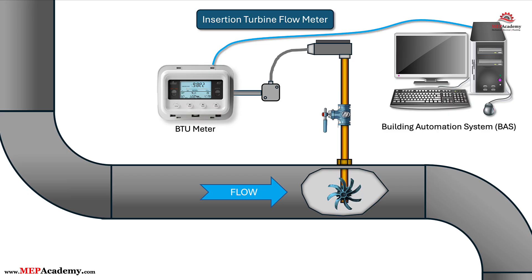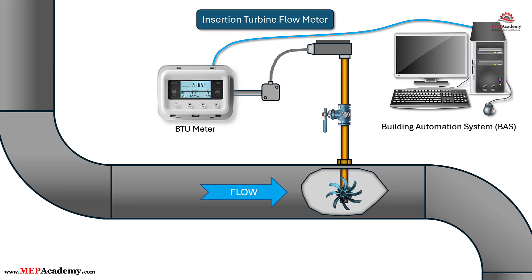The insertion turbine flow meter uses one or more turbine wheels that spin as fluid flows through the system. The rotational speed of the turbine is proportional to the flow velocity. As the turbine spins, the meter keeps track of the number of complete revolutions the wheels make. Revolutions per minute are then converted to velocity, and with a known pipe size, a flow rate in GPM or liters per second can be determined. These meters are inserted into the flow path rather than being inline, minimizing disruption to the system while making them more affordable.